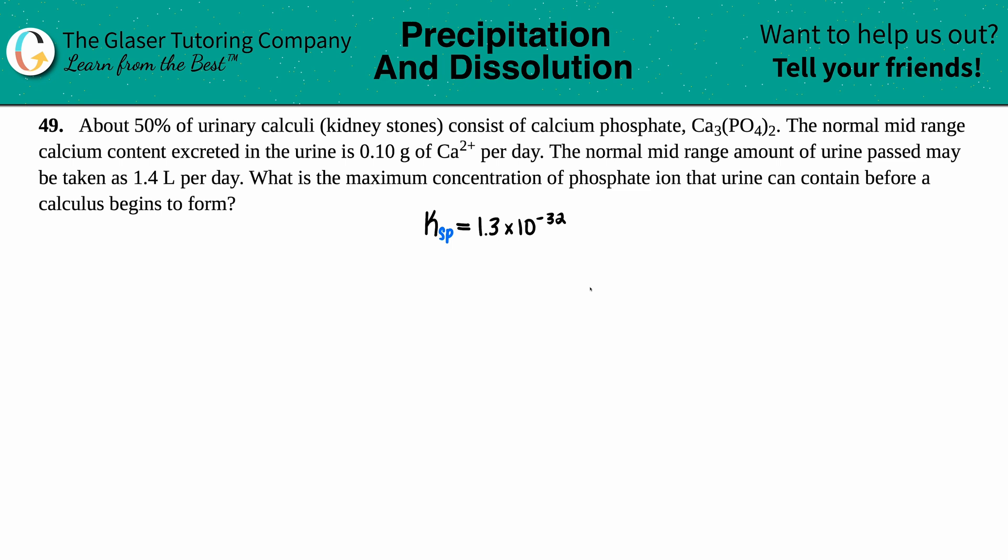Number 49. About 50% of urinary calculi, which are kidney stones in general terms, consist of calcium phosphate, Ca3(PO4)2. The normal mid-range calcium content excreted in the urine is 0.10 grams of calcium per day. The normal mid-range amount of urine passed may be taken as 1.4 liters per day. What is the maximum concentration of phosphate ion that urine can contain before a calculus begins to form, aka a kidney stone?